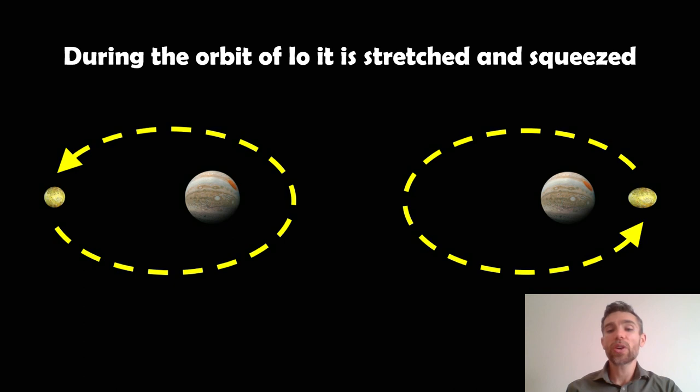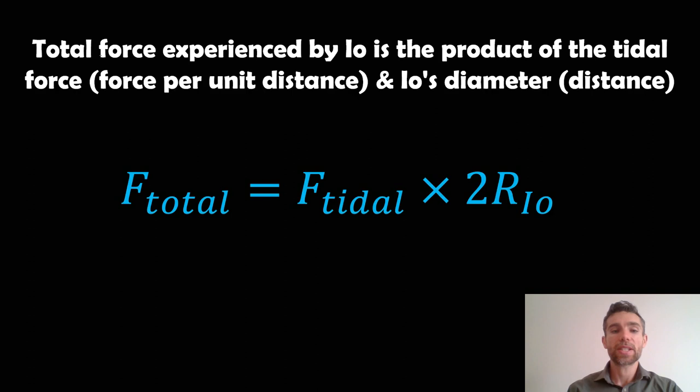So we already know, because I just mentioned it, that during the orbit of Io it's going to get stretched and squeezed. So we know that's going to occur. So we know that the tidal force throughout the orbit is not going to be static. It's going to vary. So it's then going to basically vary during the orbit. But anyway, the total force experienced by Io is the product of the tidal force, that's the force per unit distance, and Io's diameter.